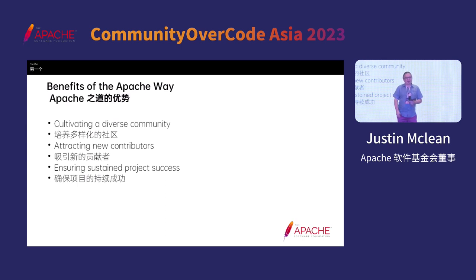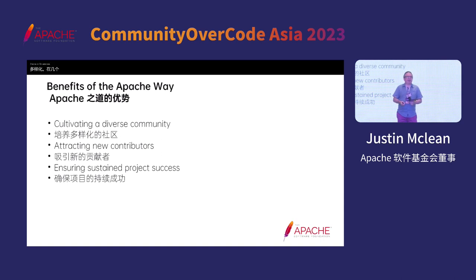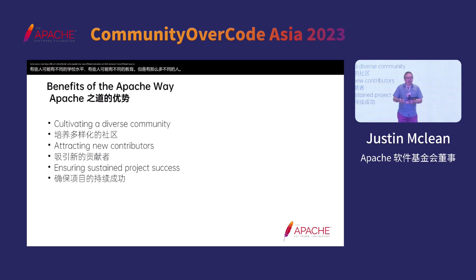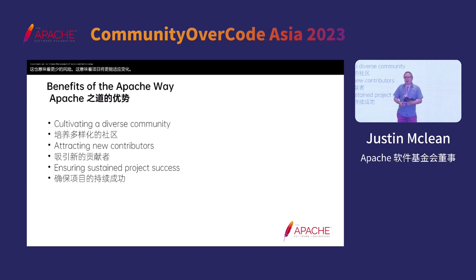Other benefits from the Apache Way include helping create a diverse community — diverse on several axes. Some people work full-time, some are hobbyists or part-time; people may have different skill levels and education. Having all those different people means they can come up with much more creative and innovative solutions. It also means less risk and more resilience to change. If you look at one axis of diversity — like who you work for — on a project there may be many people working for several different companies.